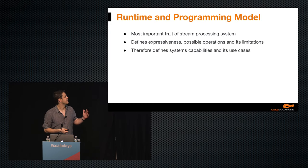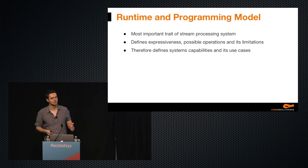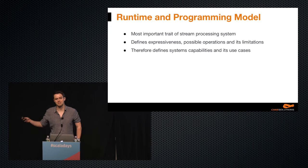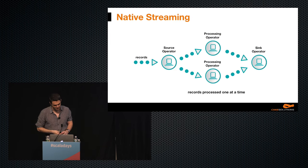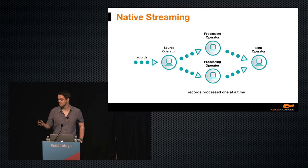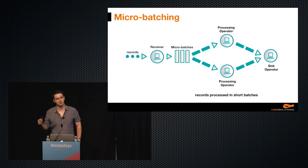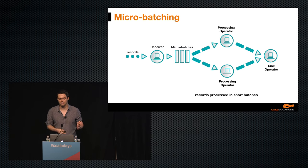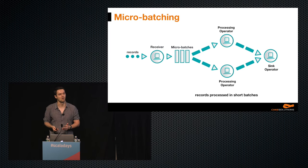Let's talk about runtime and programming model, which is probably the most important trait of the system, because it defines expressiveness, possible operations, and future limitations — and therefore defines system capabilities and its use cases. There are two distinctive approaches to implementing a streaming system. The first is native streaming, where all incoming records or events are processed as they arrive, one by one. The second approach is called micro-batching, where short batches are created from incoming records and go through the system, created according to a predefined time constant, typically every couple of seconds.